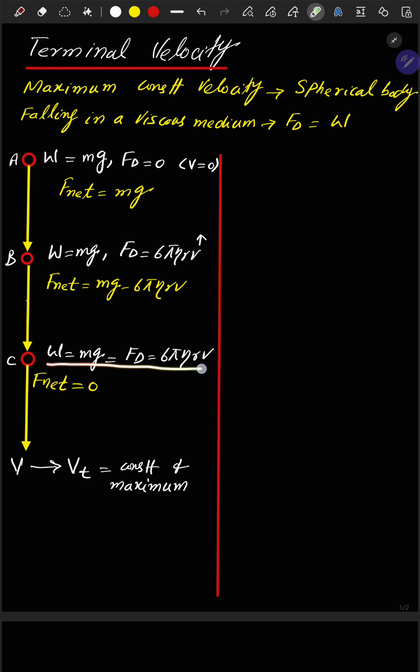A moment comes when the drag force is numerically equal to the weight of the object. At that point, the net force becomes zero with no further increase in velocity, and that is the constant and maximum velocity which we call terminal velocity.